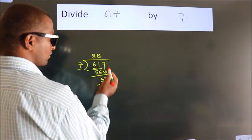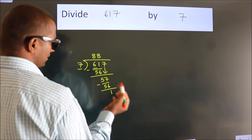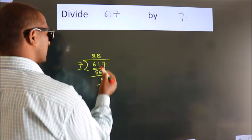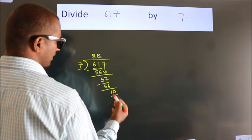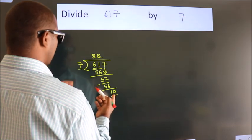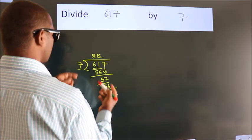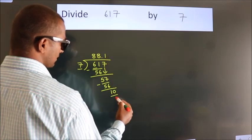After this, no more numbers to bring down. So what we do is put a dot and take 0. So, 10. A number close to 10 in the 7 table is 7×1=7.